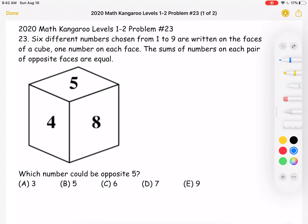Six different numbers chosen from 1 to 9 are written on the faces of a cube, one number on each face. The sums of numbers on each pair of opposite faces are equal.